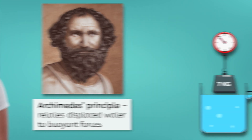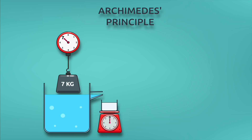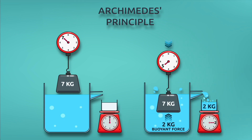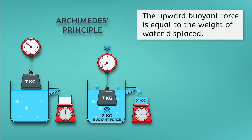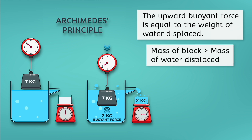Let's look at an example. Consider this 7-kilogram block that is about to be placed in a beaker of water. What will happen to the water in the beaker once it is submerged? A volume of water equal to the volume of the block will be displaced. In this case, we catch that displaced water and weigh it. Archimedes discovered that the upward buoyant force on the object will always be equal to the weight of the water that it displaces. Our 7-kilogram block displaced 2 kilograms of water, so that's the upward force. Will it sink or float? The metal block has a larger mass than the water it displaced, so it sinks.